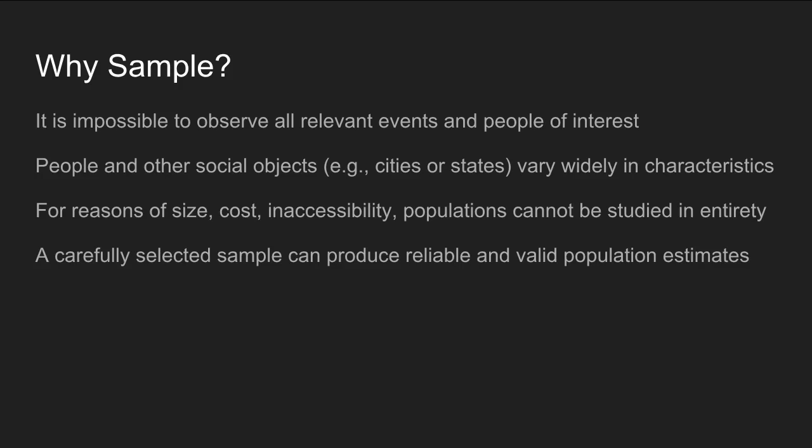Perhaps the most important reason for sampling is that a carefully selected sample can produce reliable and valid population estimates. It's not always necessary to study the whole population. It can be more efficient to carefully and systematically select a subset of people who are representative of the population — quicker, more efficient, and less expensive — and still produce equally reliable and valid estimates.